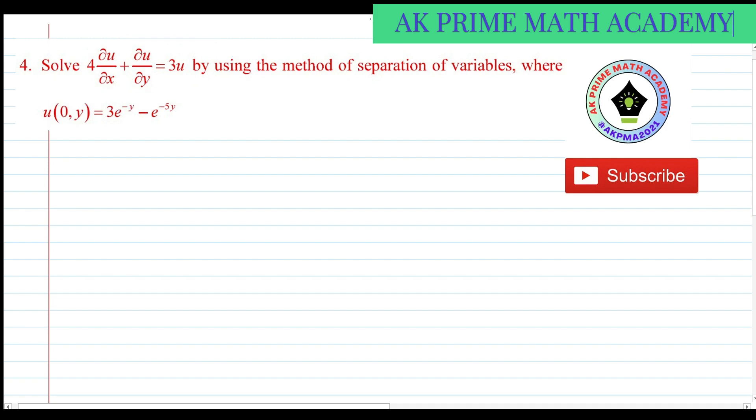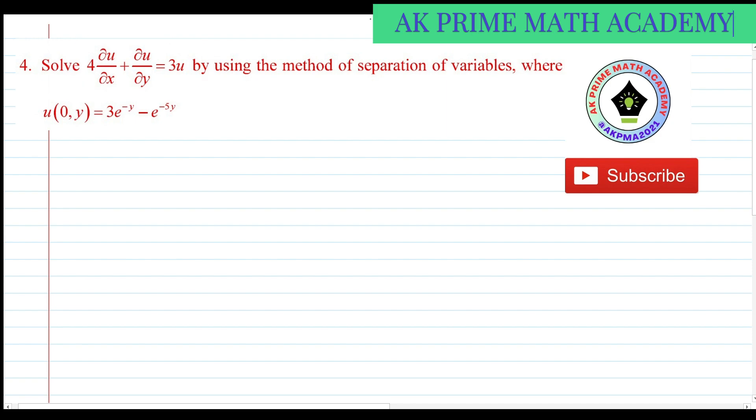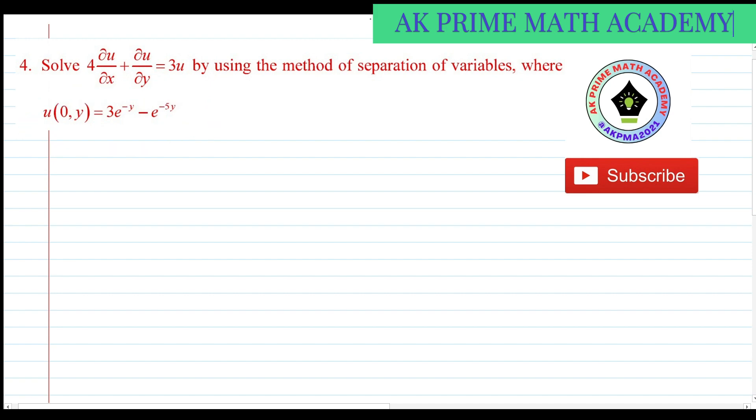Solve: 4 del u by del x plus del u by del y is equal to 3u, by using method of separation of variables, where u(0, y) is equal to 3 e power minus y minus e power minus 5y. This question is a bit different from the previous questions — the last four to five steps are a bit different.